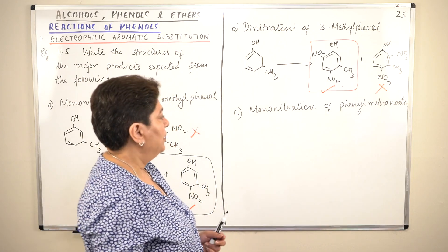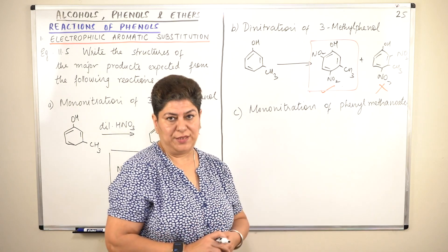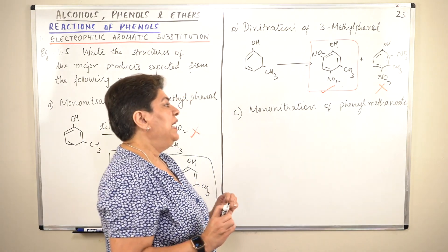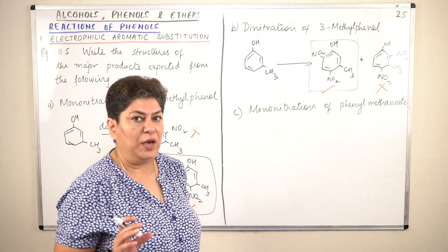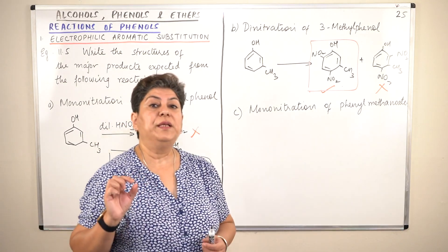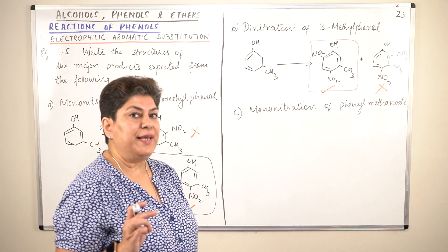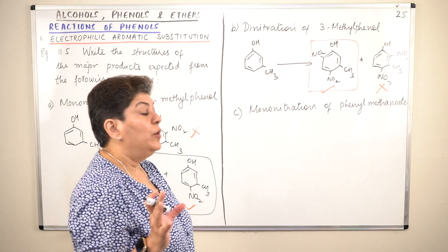Then comes the third part. Mononitration of phenyl methanoate. Phenyl methanoate is where phenol has been substituted by methanoic acid. What is methanoic acid? HCOOH.